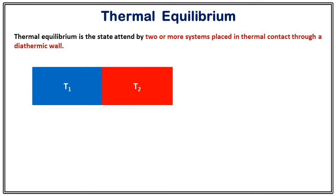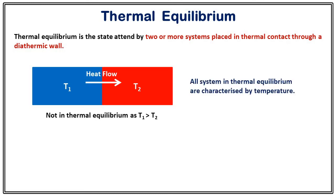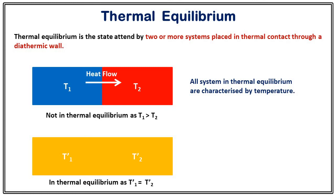Suppose I have two systems with different temperatures, where the temperature of system one is greater than that of system two. If they are in thermal contact through a diathermic wall, heat flows from system one to system two. All systems in thermal equilibrium are characterized by temperature. Heat will flow until the temperatures in both systems are equal — say they reach T1-prime and T2-prime — and when T1-prime equals T2-prime, heat flow stops and the system is in thermal equilibrium.